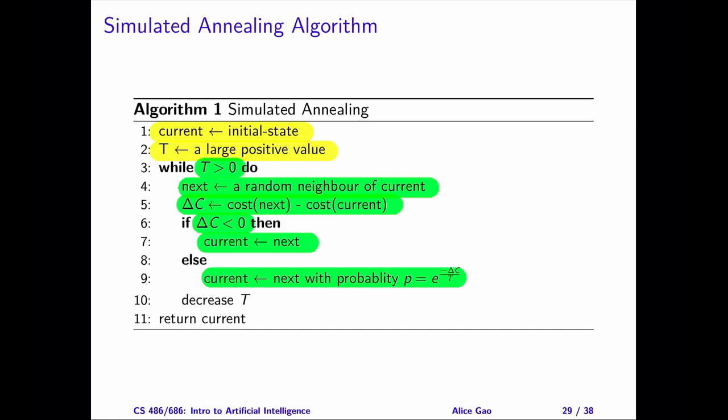One thing you might be wondering is, how can I implement this probability? Here's a common trick. Draw a random number between 0 and 1. If this number is smaller than the probability P, it is a yes and we will move to the neighbor. Otherwise, it is a no and we'll stay put and choose another random neighbor.